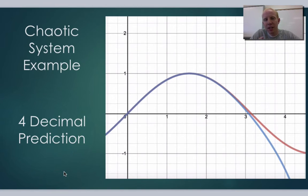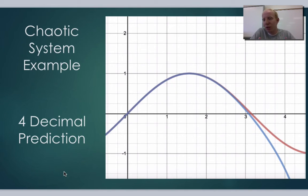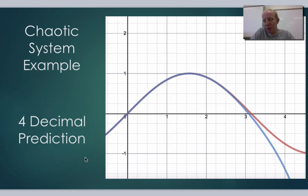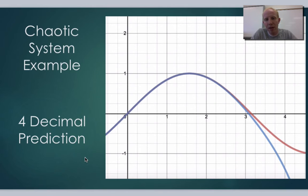That's how chaos is, and it's not because our computers are bad or anything. It's because of the nature of the system — there are so many factors involved, or it's behaving in such a way that any small change in that initial setup is going to change how it behaves drastically. We have to be very precise with our measurements to predict any type of chaotic system.